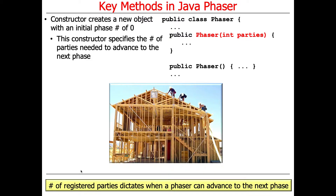The number of registered parties dictates when the phaser can advance to the next phase. It's kind of like a work unit — you might say we need seven roofers to roof, and when the seventh person shows up, they can all start. That might not be how you'd really do it on a worksite, but let's say that's what we're doing here — maybe they have to carry some heavy beams and need everybody present to start.